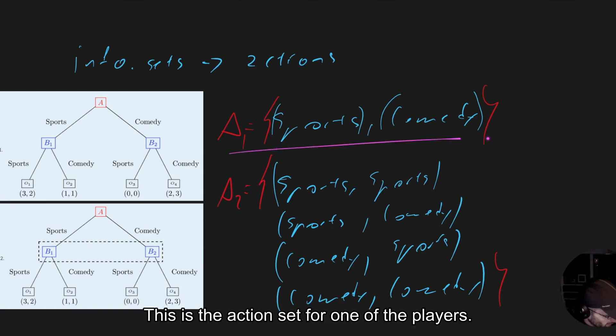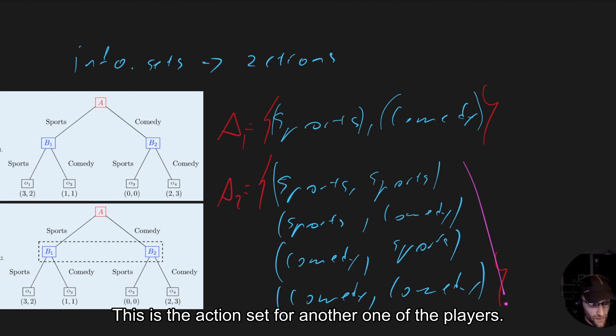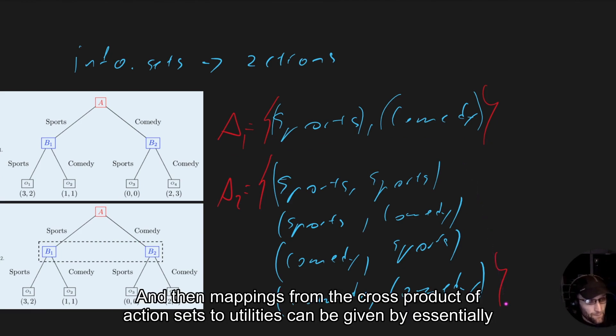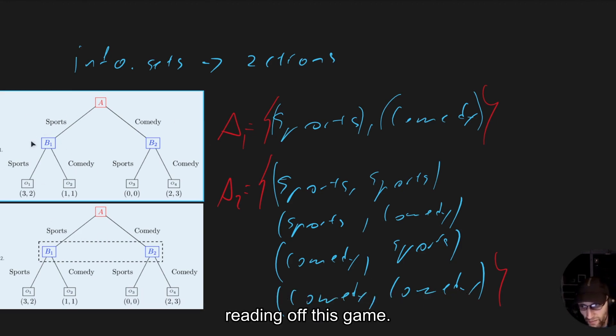Action sets available to the players. This is the action set for one of the players. This is the action set for another one of the players. And then mappings from the cross product of our action sets to utilities can be given by essentially reading off this game.